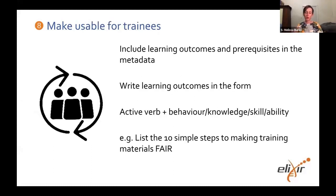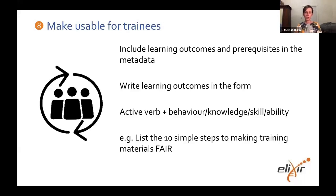Number eight — there is another group of people who might want to reuse training materials, and this is the trainees themselves. When you want to learn something for yourself but don't have time to go on a course, you might go out onto the internet and look for things already out there so that you can teach yourself. For trainees, they want to know what the training is about, but specifically what they're going to get out of it and what they need to know in advance for it to be the right training for them. So in your metadata, you should always be including learning outcomes and prerequisites. The way you write these is really important and you should aim to use a consistent format.